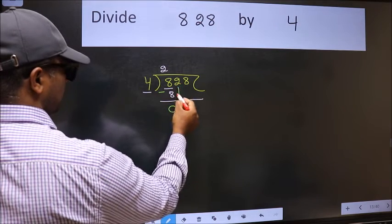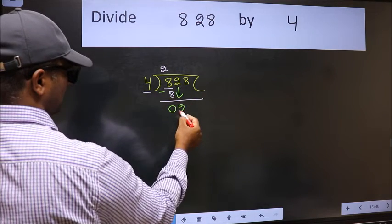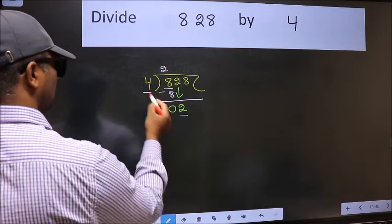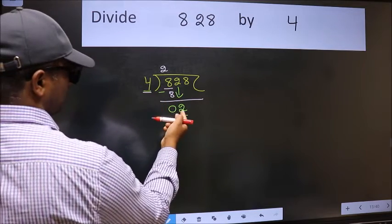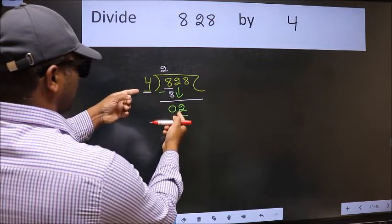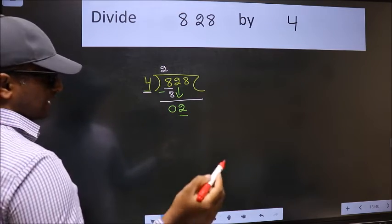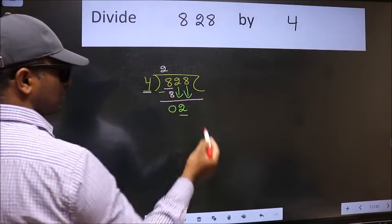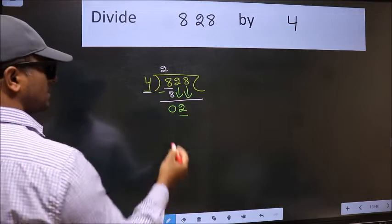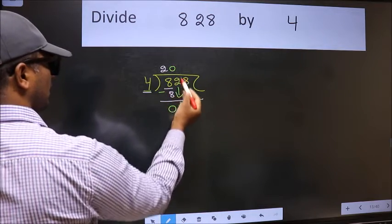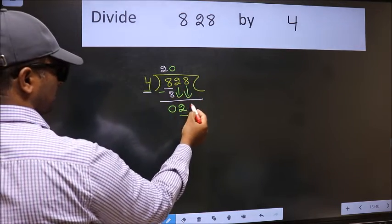After this, bring down the beside number. So, 2 down. Now, here we have 2 and here 4. 2 is smaller than 4, so we should bring down the second number. And the rule to bring down the second number is we should put 0 here. Then only we can bring this number down.